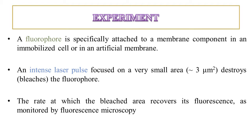After tagging all integral membrane proteins — sometimes also called membrane-spanning proteins — with the fluorophore, you take a specific area of the plasma membrane and bleach that area with an intense laser pulse. This removes the fluorophore from that specific area, so all other integral proteins emit color, but the bleached region loses color and appears white. The bleached area is approximately three micrometer square.